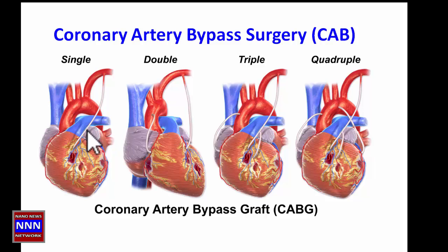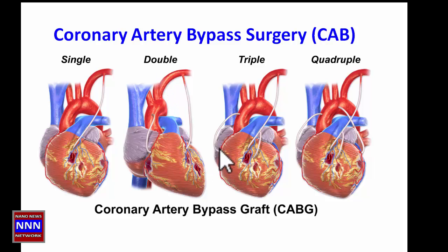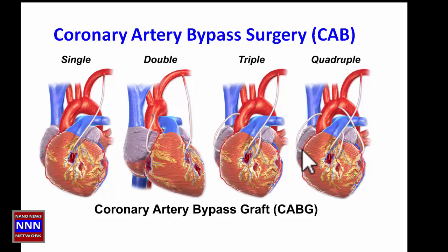Arteries from the chest wall stay open for a much longer duration compared to vein grafts — they have much better longevity. Sometimes an artery from the chest wall is attached to one branch, and a vein graft from a different source is attached to another arterial blockage, creating a double bypass. If three vessels are blocked, a jump bypass graft is used, where the chest wall artery is divided into two branches by attaching a separate vein graft, creating a Y-graft or jump graft — this gives us a triple bypass.